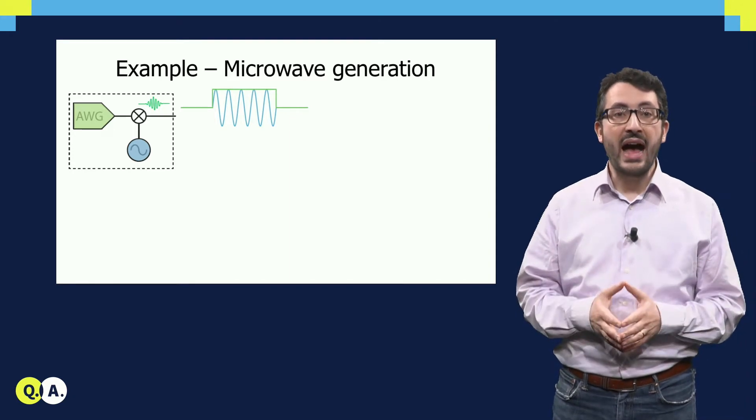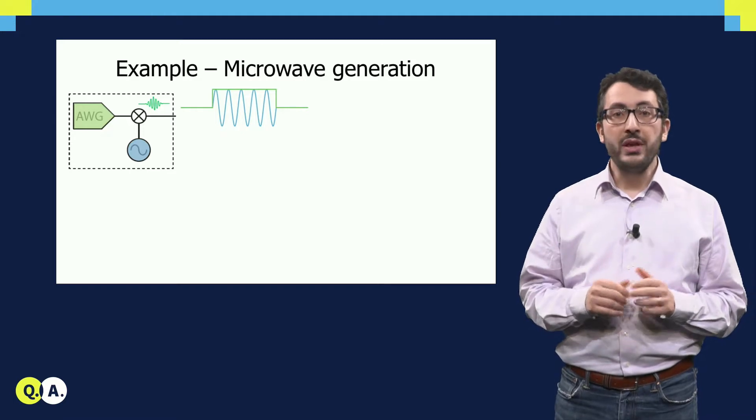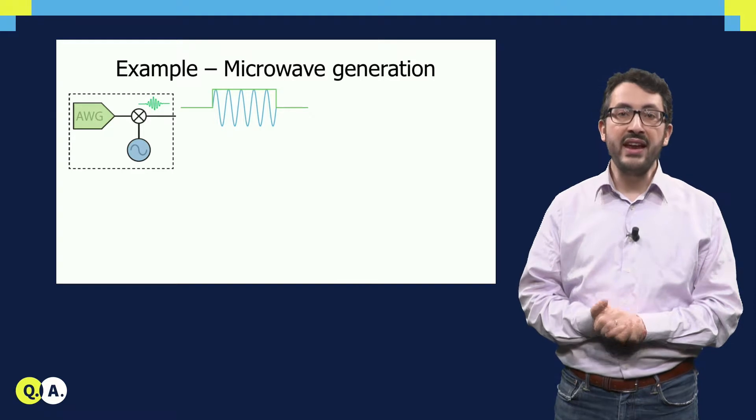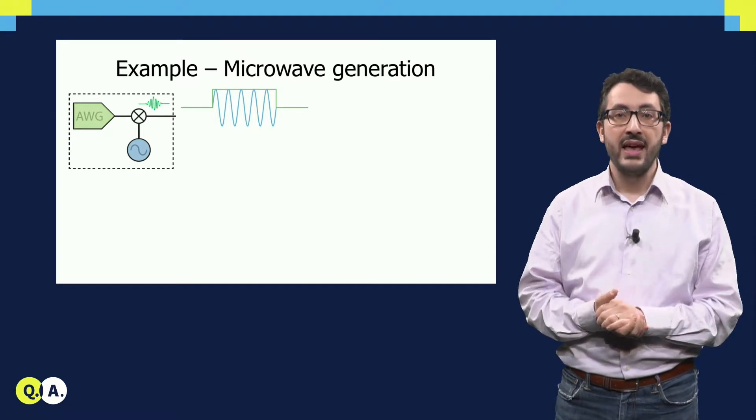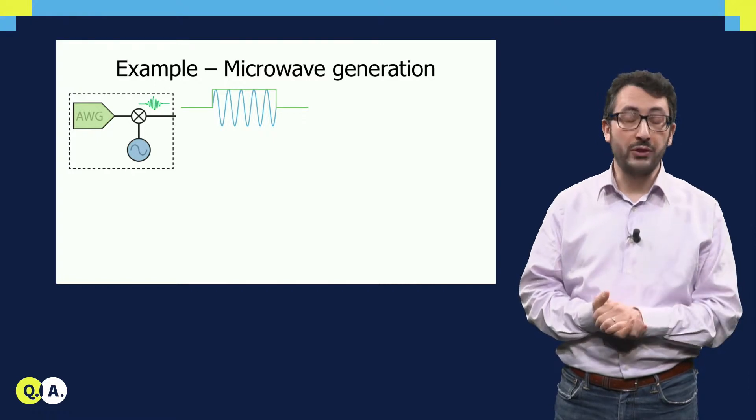Now, the question is, how precise should this pulse be? With the approach I've shown you before using the simulators, we can analyze any error or non-ideality in this pulse and find out how this relates to the final error in the full quantum computer.